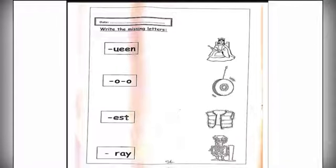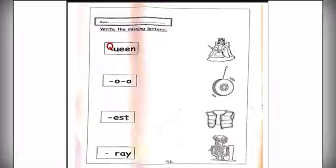Write the missing letters. The first one here, we have a QUEEN. Start with letter K. The next one: YOYO. Start with letter Y.